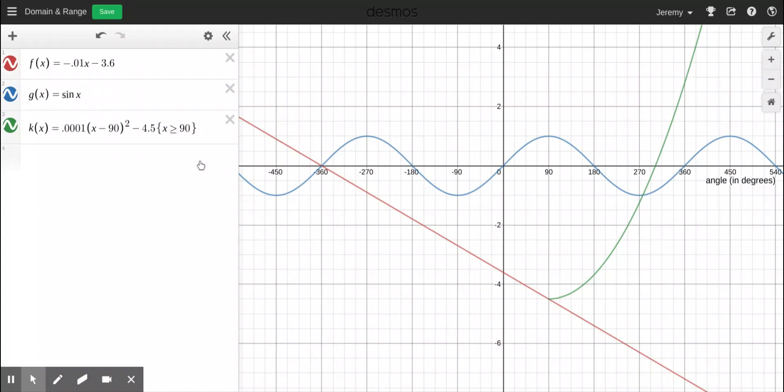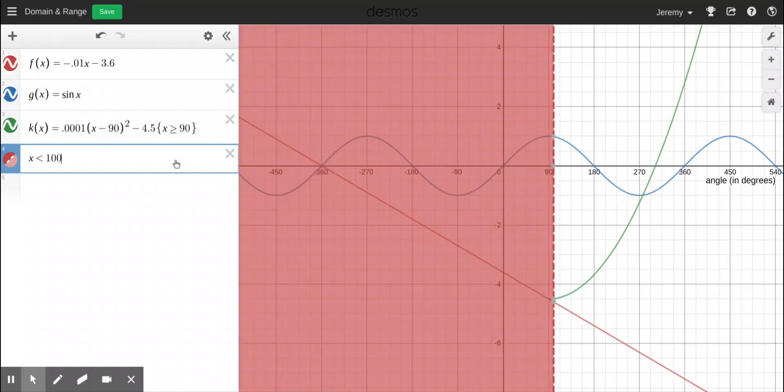So let's explain shading. The way you shade is you do an inequality. So you do, let's say, x less than 100. And notice it's shading all the values less than x equals 100. Here's 90, here's 100, and it's shading all the values less than 100.